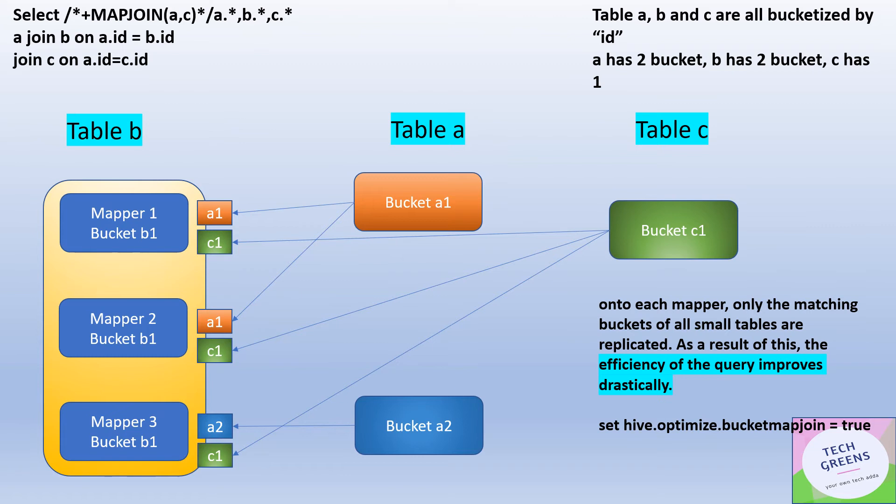And their bucket number should be multiple of each other. So here in this example, table A has two buckets. You can see A1, A2. Table B has two buckets, and table C has one bucket.